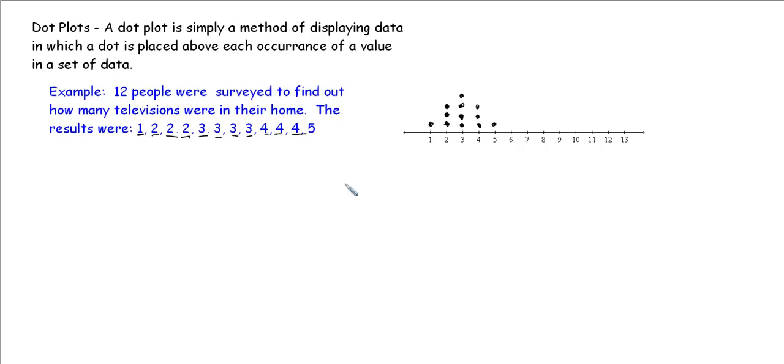Plain and simple, a dot plot is a way to express a set of data using a number line. Now this method of expressing the data affords us some information, and we'll take a look at that in just a moment.